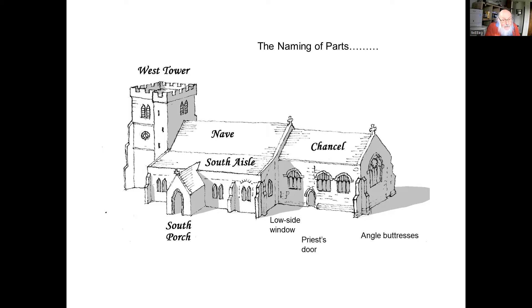The chancel is where the altar is and where the priest and choir do their stuff. That's invariably at the east end of the nave. The chancel might have aisles, but much less commonly. There's a low side window — interesting little windows set low in the south wall of the chancel at its west end. And a priest's door — a separate door, because the chancel is really the domain of the priest and he has his own doorway usually.